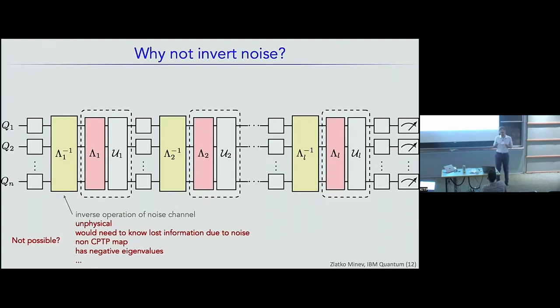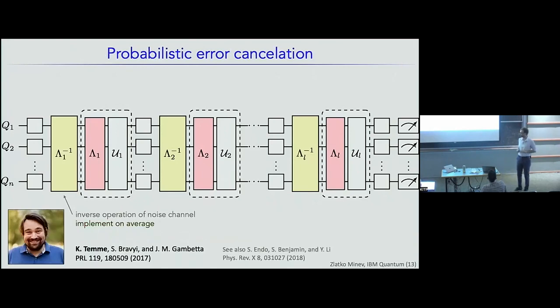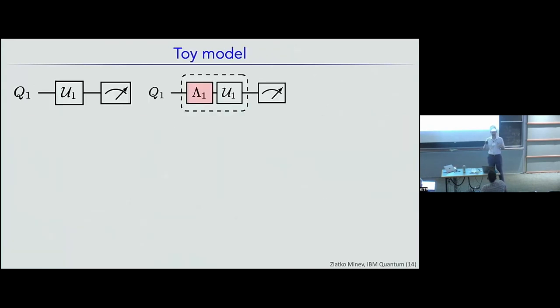Nonetheless, let's say that maybe there is a way to do this, even though we don't keep track of the bath, we don't keep track of the measurement record. On average, however, we perhaps can do this, and this is where I'm very thankful to and lucky to have great colleagues like Kristen Temme, Sergey Bravyi, and Jay Gambetta, who proposed a beautiful theoretical idea. They suggested that, in principle, you can implement this inverse on average by introducing a new method known as probabilistic error cancellation.